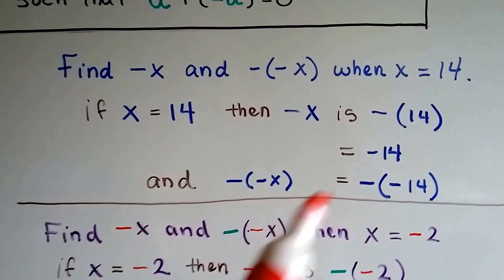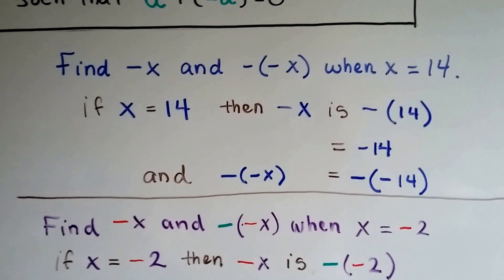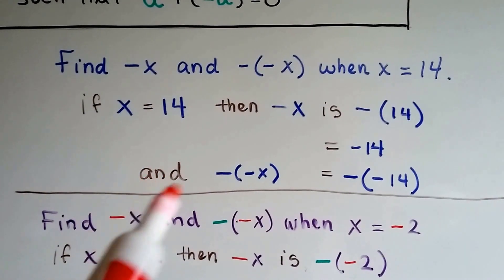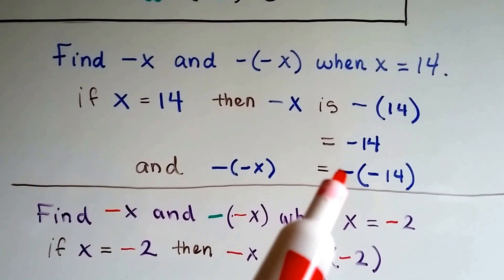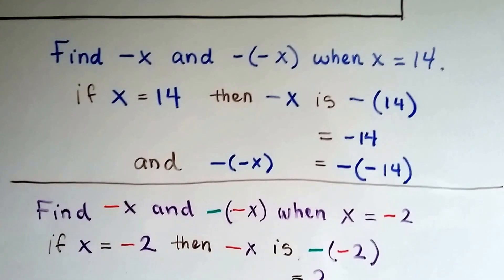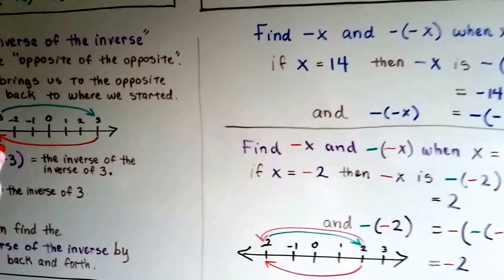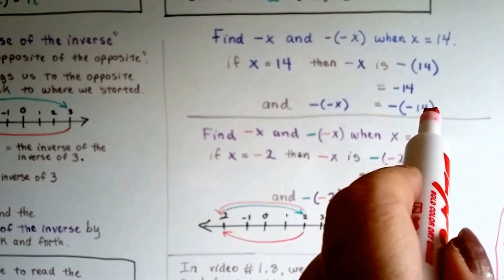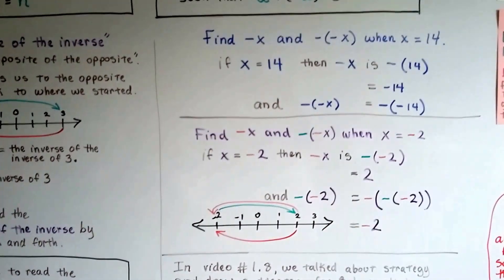If x is 14, then the inverse of x is negative 14 — it takes us to the other side of zero on the number line. They make a zero pair. That is negative 14. The negative sign in front of the parentheses or without the parentheses is still negative 14. If we want the inverse of the inverse of x when x equals 14, that means we have the inverse of the inverse of 14, and that's going to take us back to 14. We start at 14, go to its inverse which is negative 14, and then go back to 14 again.